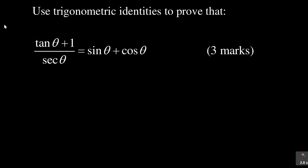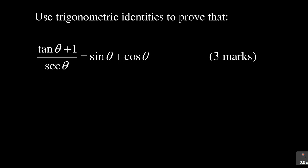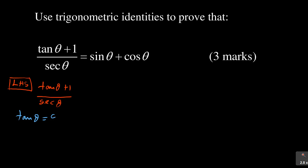The first question says you must prove that the left hand side is equal or identical to the right hand side. I can see that my left hand side has more terms, so I'll choose to work from the left hand side. My left hand side is tan θ + 1 over sec θ. You need to know that tan θ equals sin θ over cos θ, and that sec θ equals 1 over cos θ.